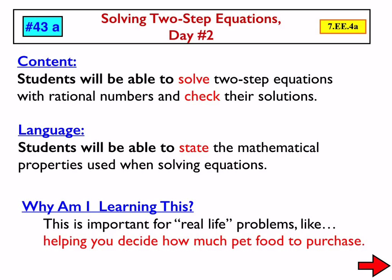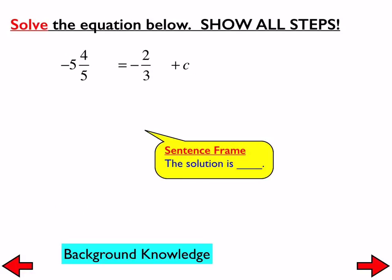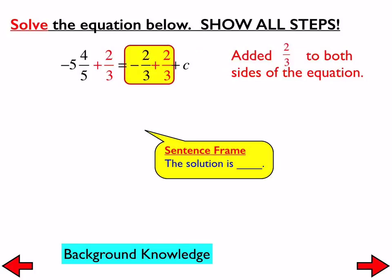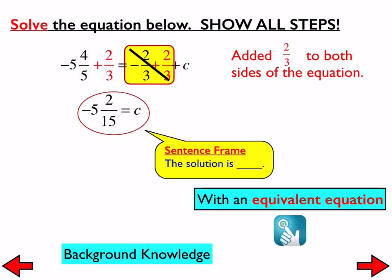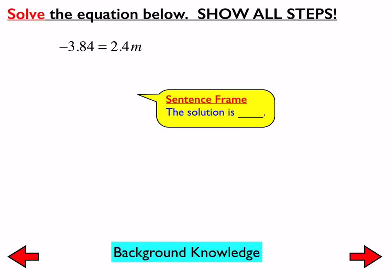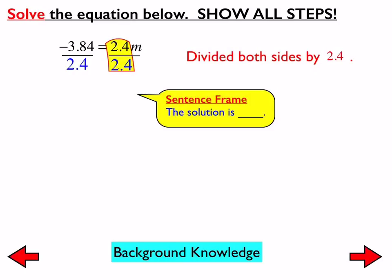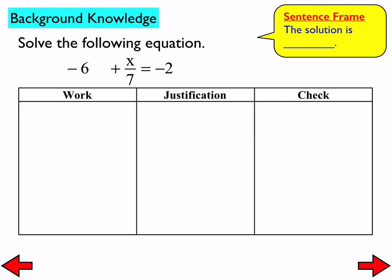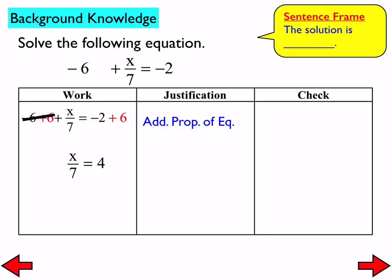We are going to continue with the idea of checking your solution today. We started with solving one-step equations, consistently looking to do the inverse properties of what we saw, and we state our answer as 'the solution is' because that really is what you're finding. We went through all four operations with one step, then yesterday talked about two-step equations and added the idea of justifying — stating which math properties we used. If we added the same number to each side, it's the addition property of equality; if you subtract, it's the subtraction property of equality, and so on.